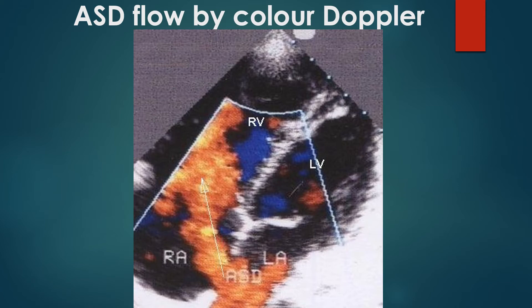Reverse flow across the atrial septal defect — that is, right-to-left shunt — can also be seen in total anomalous pulmonary venous connection.